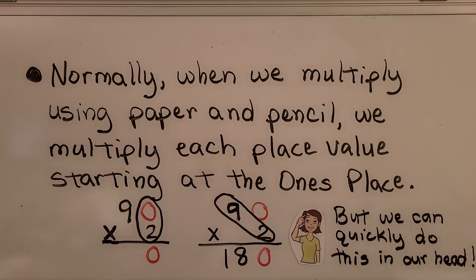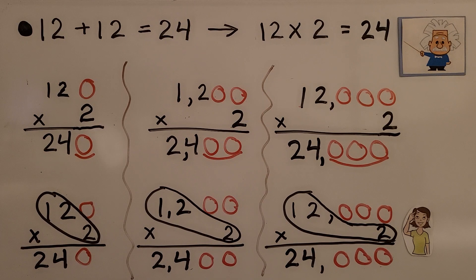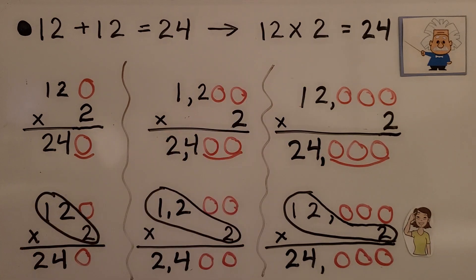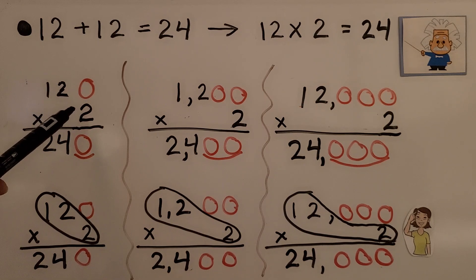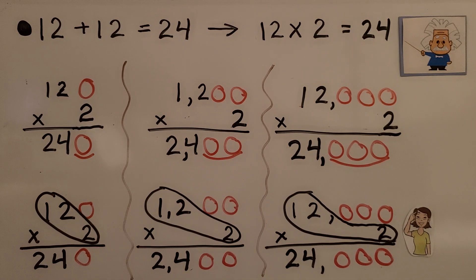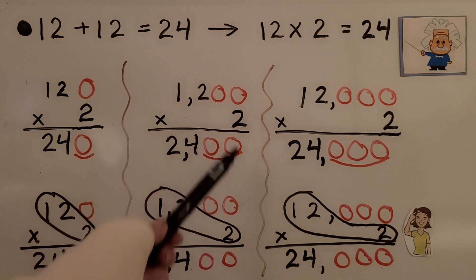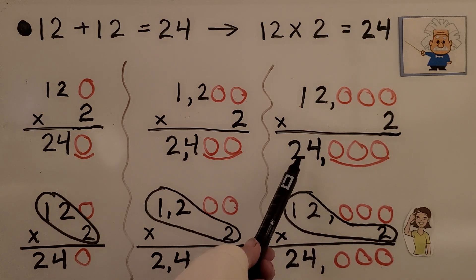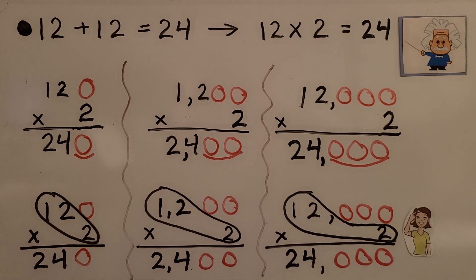But we could quickly do this in our head. For 120 times 2, we think 12 times 2 is 24, and we have one zero — it's 240. 1,200 times 2 would be 24 with two zeros — it would be 2,400. 12,000 times 2 would be 24 with three zeros — it would be 24,000.